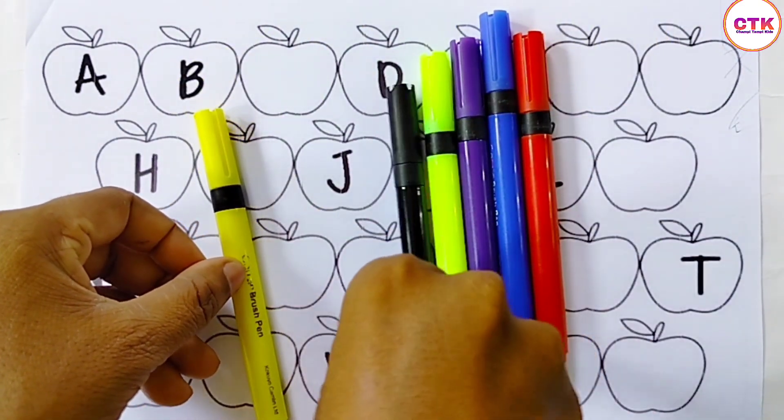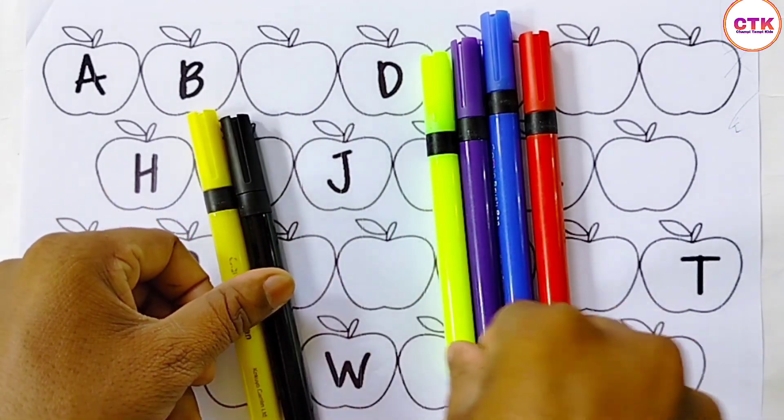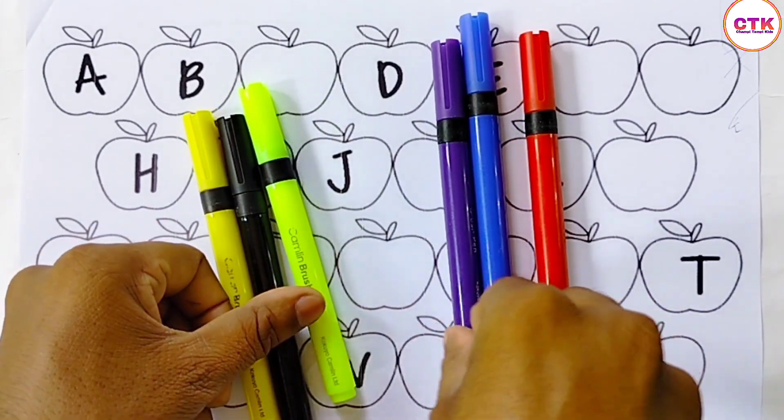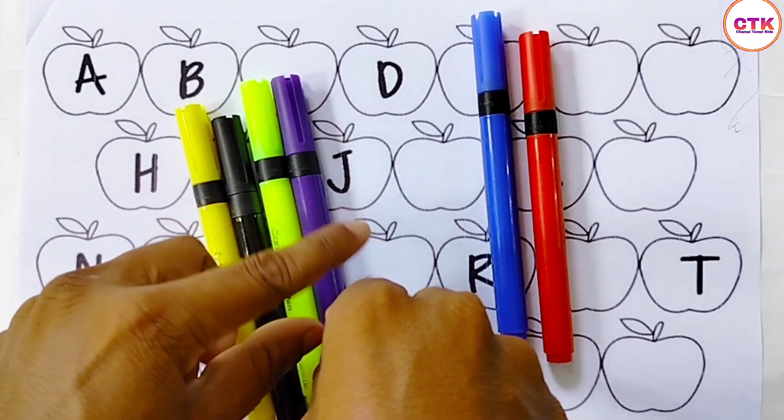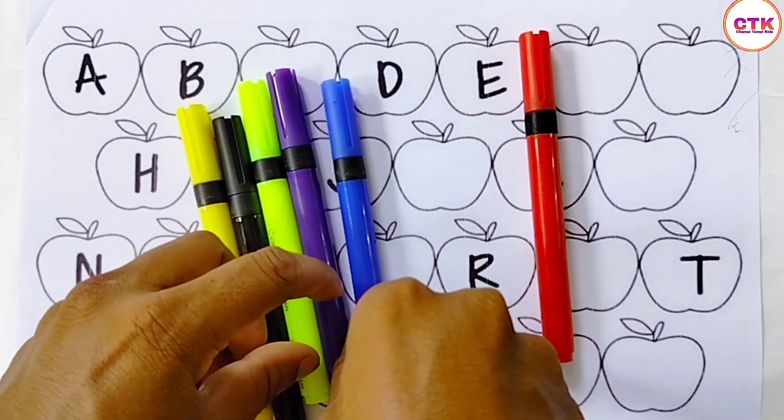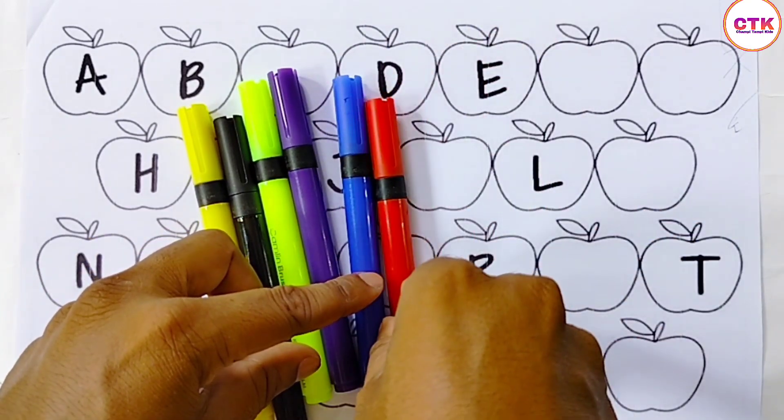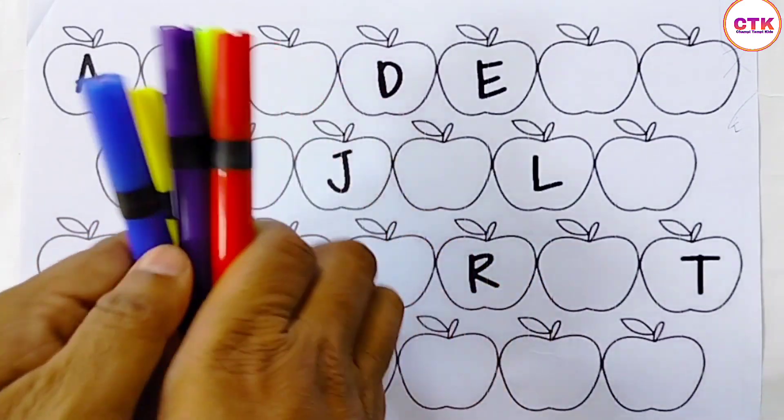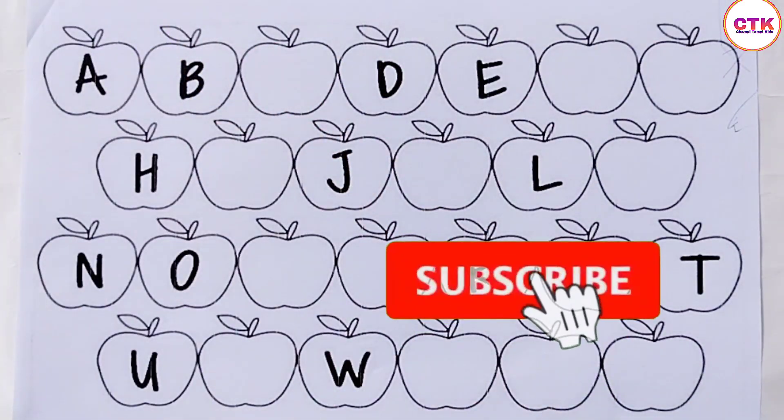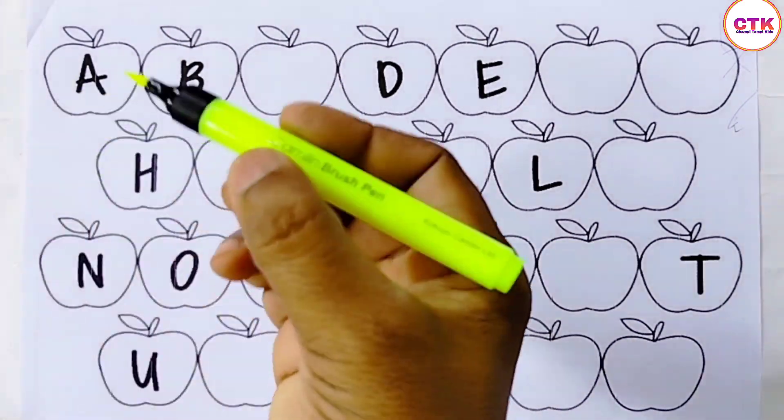Hello color, black color, light green color, violet color, blue color, red color. Let's learn alphabet A to Z.